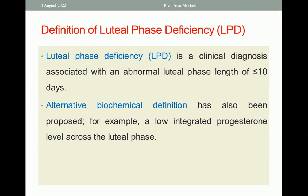Let us go to our topic today, which is Luteal Phase Deficiency, also called Luteal Phase Defect. What is the definition of Luteal Phase Deficiency? It is a clinical diagnosis associated with an abnormally short Luteal Phase length of less than or equal to 10 days. In other studies, they consider it 9 days or 11 days. But according to the American Society of Reproductive Medicine, equal to or less than 10 days is called Luteal Phase Deficiency.